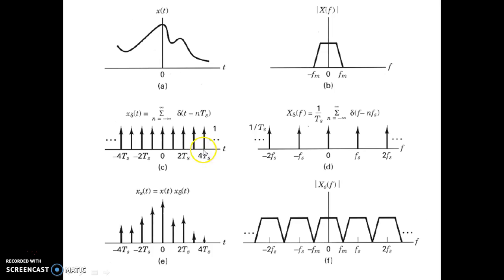All right, let us see the frequency spectrum. The frequency spectrum of x_delta(t)—the frequency spectrum of f_delta(t)—is again another train of impulses, and you can see the expression here: delta(f - nfs).